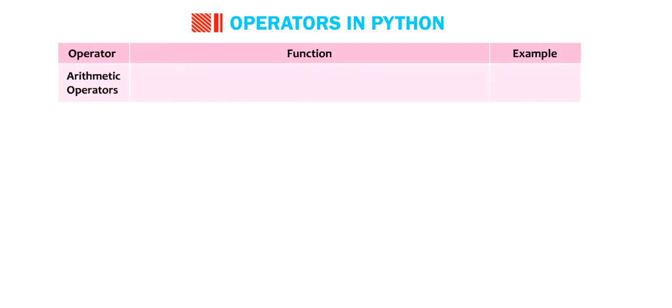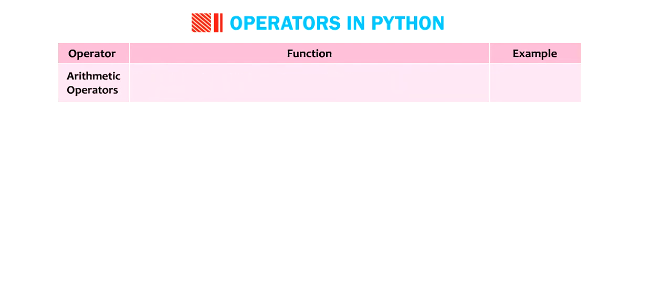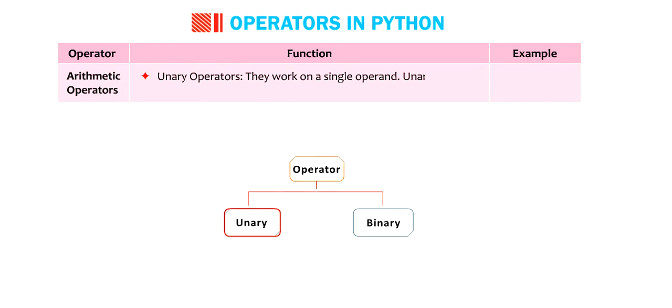Operator, arithmetic operators. Function. These operators are used to perform arithmetic operations on the data. These can be further classified as Unary operators. They work on a single operand.